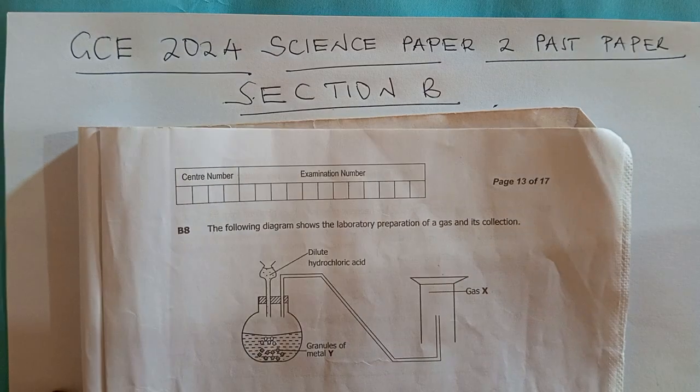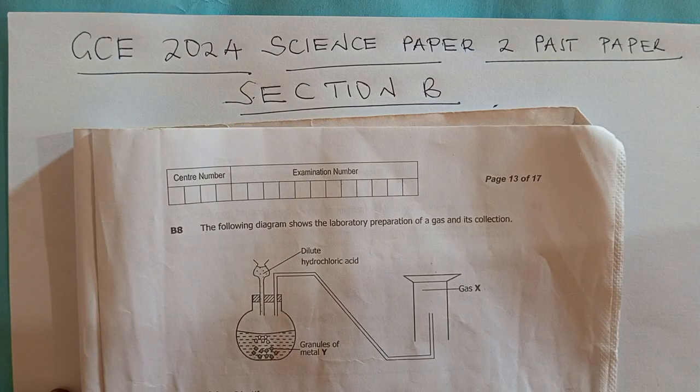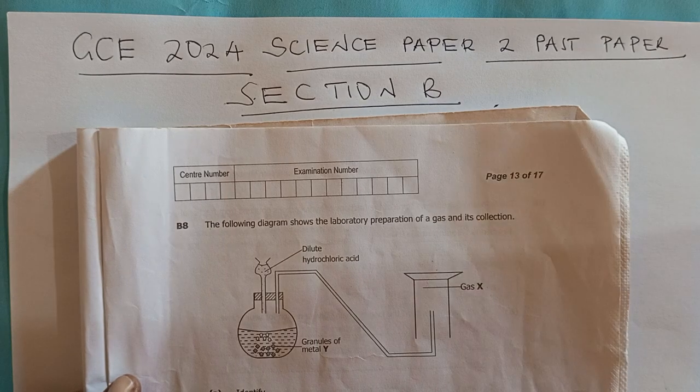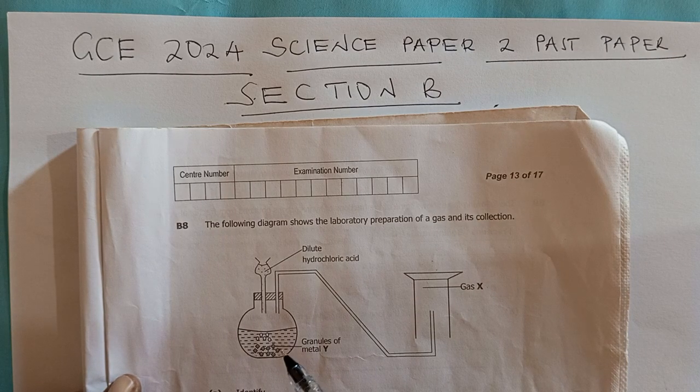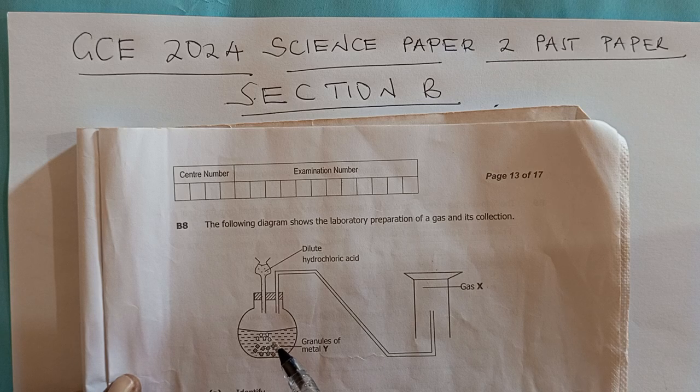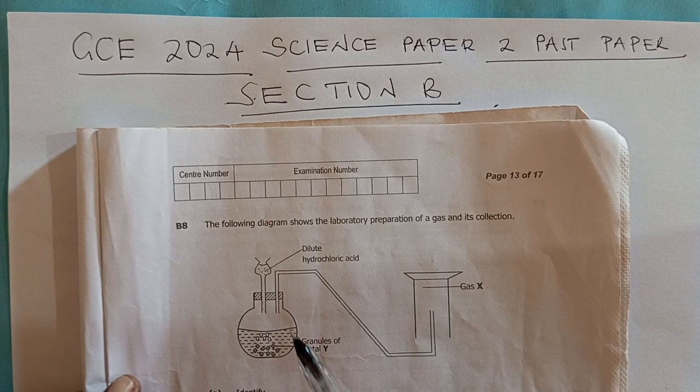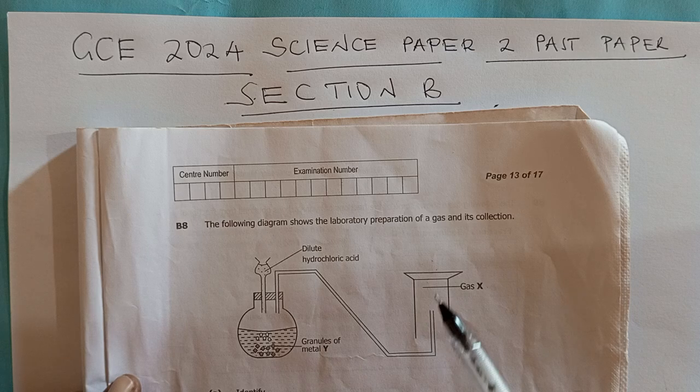B8 shows the following diagram for the laboratory preparation of a gas. This setup has granules of metal Y in a dilute acid. We know that when an acid reacts with a metal, what is produced is hydrogen gas.